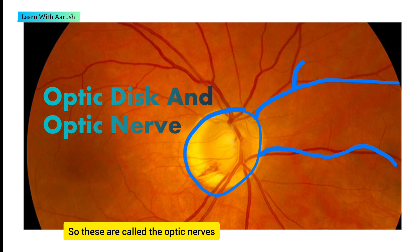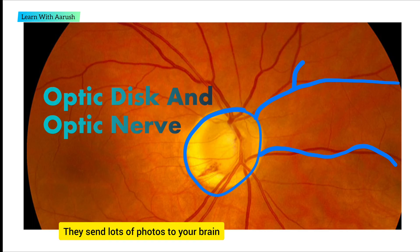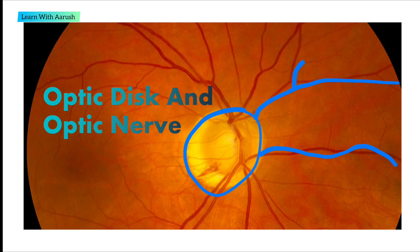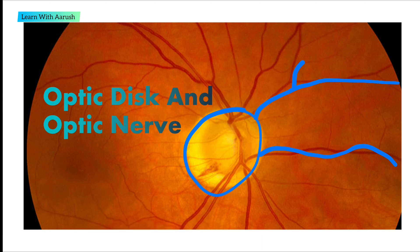These are called the optic nerves. They send lots of photos to your brain so that the brain has an idea of what the outside world looks like.